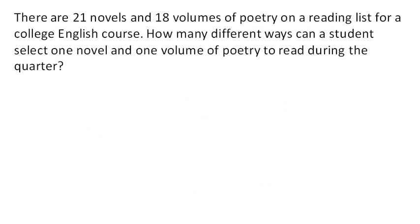Suppose there are 21 novels and 18 volumes of poetry on a reading list for an English course. How many different ways can you select one novel and one volume of poetry? Well, there are 21 choices for the novel and 18 choices for the poetry. We multiply those together, and that gives us a total of 378 possibilities.